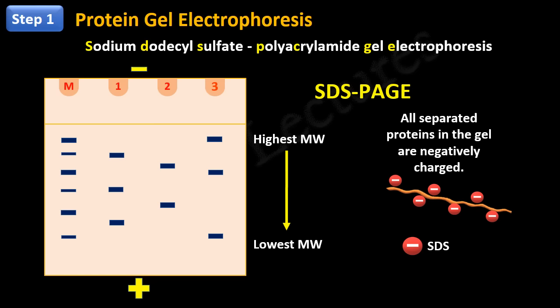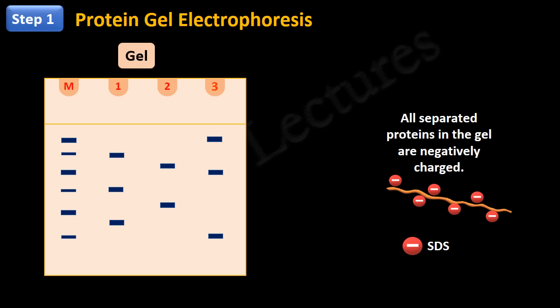So, this is our polyacrylamide gel after SDS-PAGE. The bands shown here represent proteins present in each sample. The leftmost lane of the gel is reserved for the molecular weight markers.